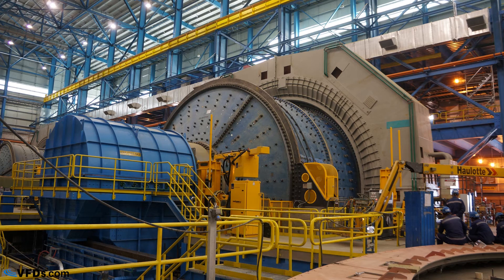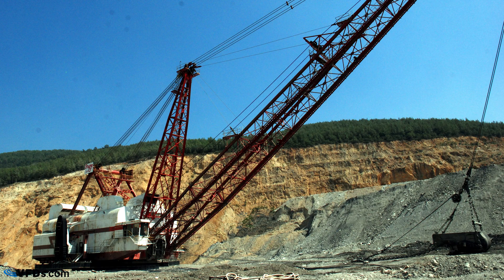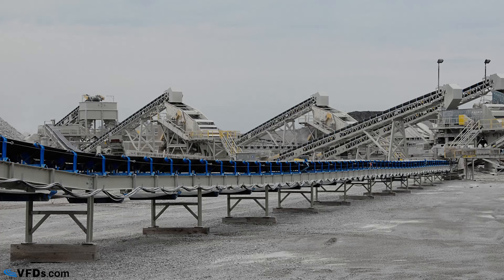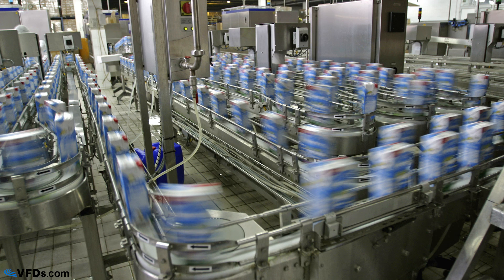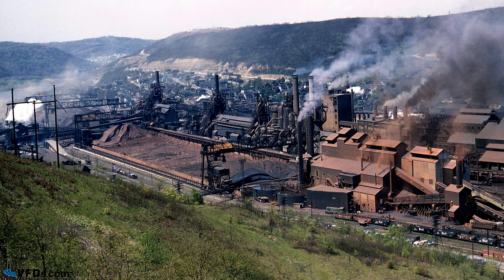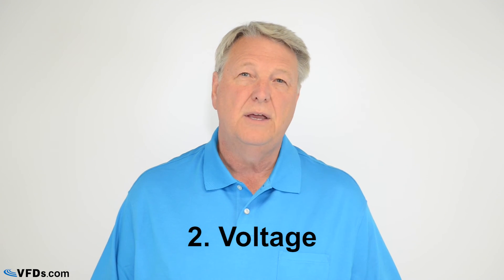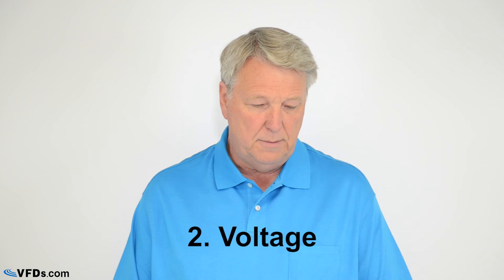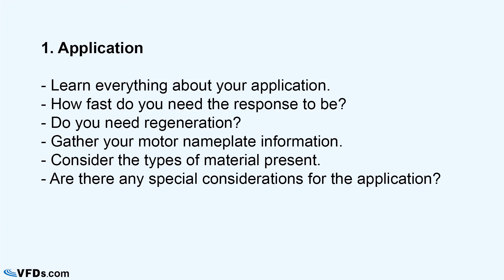The application means what is the motor driving. Examples include a mine hoist, a grinding or ball mill, a shovel or drag line excavator, an overland conveyor, or material handling. The most difficult applications are things like fully integrated steel mill drives. Each requires different types of drives and different types of engineering experience. Learn everything about your application: how fast does the response need to be, do you need regeneration, what is the motor nameplate, what type of materials will be present, and what special considerations apply?